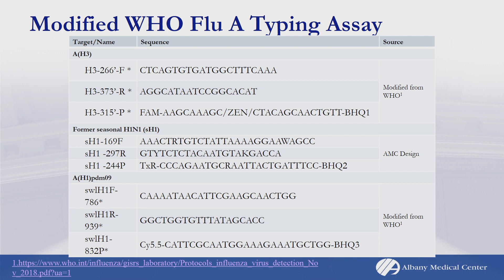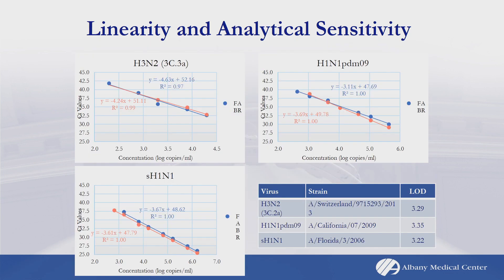We've been working on a modified flu typing assay. We're using in part modifications of some WHO targets for typing, as well as designing our own primers for the former seasonal H1N1. This is still a study in progress. In limited detection studies with a few different viral strains compared to the Fusion Flu A assay, our LDT approaches but doesn't quite match the LOD of the Fusion Flu A — but it performs very well with high linearity and efficiency comparable to the Fusion Flu A assay.